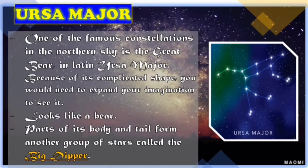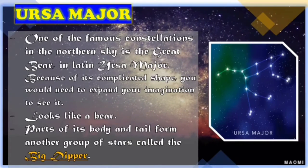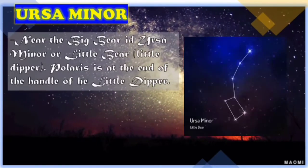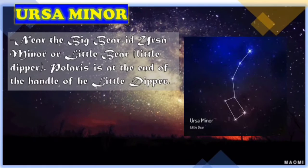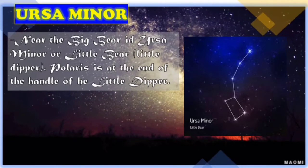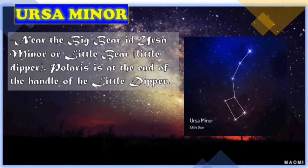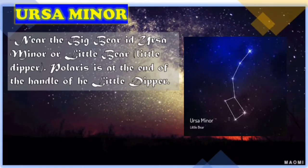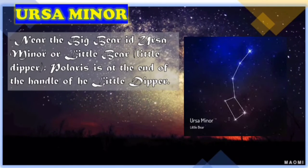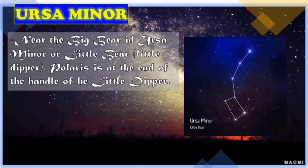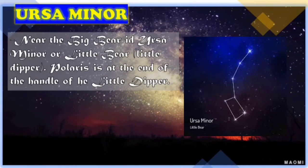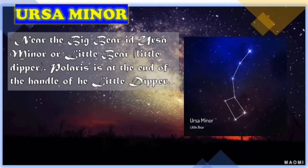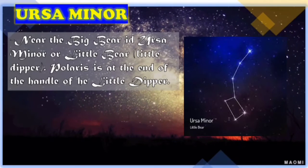Number two constellation is Ursa Minor. Near the Big Bear is Ursa Minor, or Little Bear or Little Dipper. Polaris is at the end of the handle of the Little Dipper. This is how Ursa Minor looks.